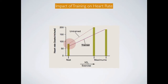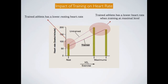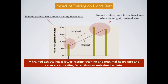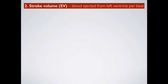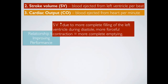The impact of training on heart rate can easily be seen in this graph, where at rest the trained athlete has a lower resting heart rate. Even when training at maximal level, the trained athlete's heart rate is lower. This is due to the far more efficient cardiovascular system and the strengthening of the heart muscle. It's also interesting to note that trained athletes recover much faster than untrained athletes, returning to resting heart rate much more quickly.